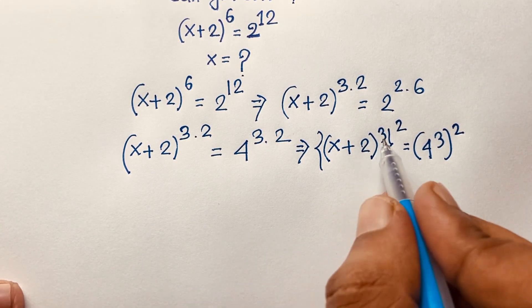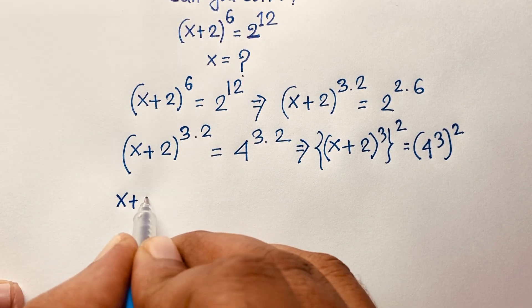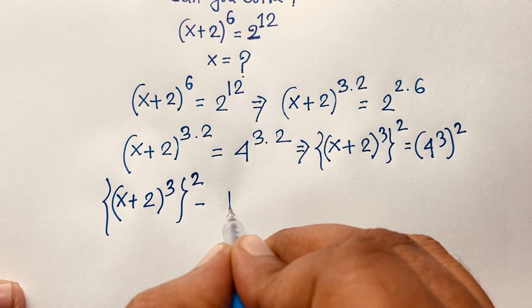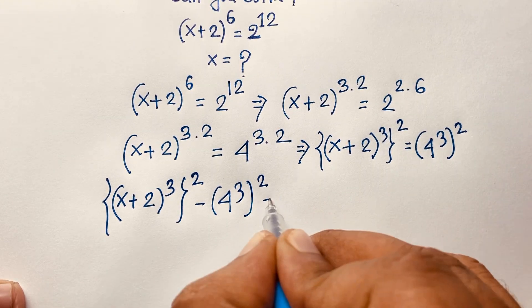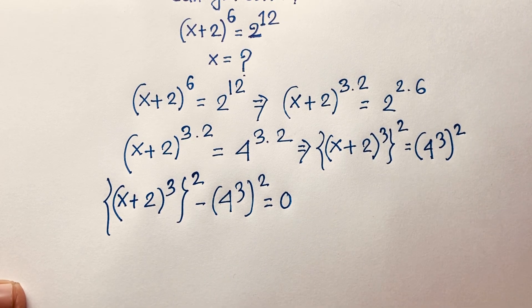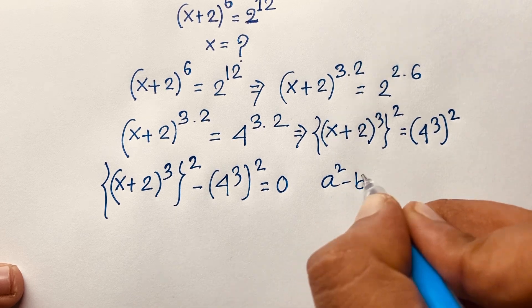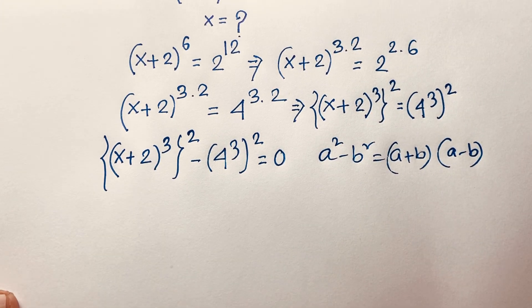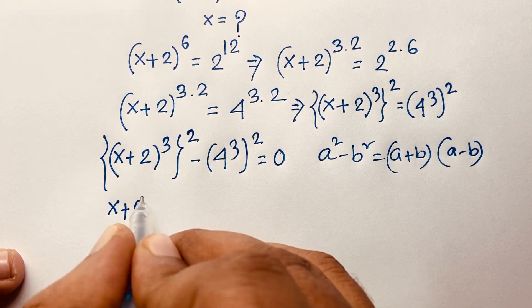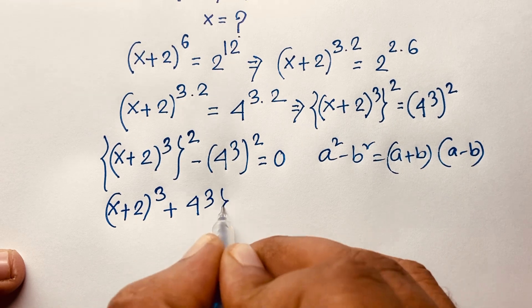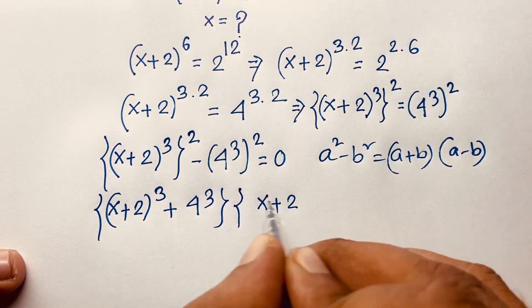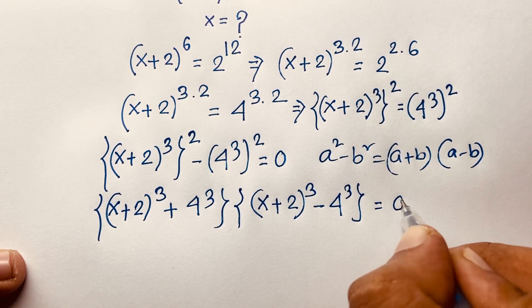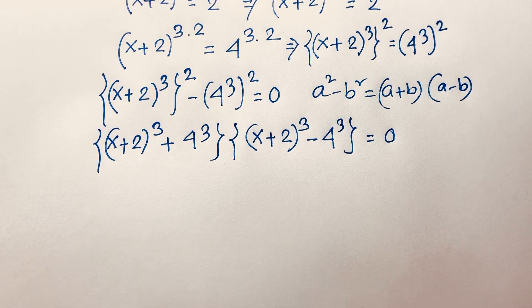Now I can see this expression: [(x+2)^3]^2 minus [4^3]^2 = 0, moving the right-hand value to this side. Then applying the formula a² − b² = (a + b)(a − b), where a = (x+2)^3 and b = 4^3, we get [(x+2)^3 + 4^3] × [(x+2)^3 − 4^3] = 0. So we find two cases.